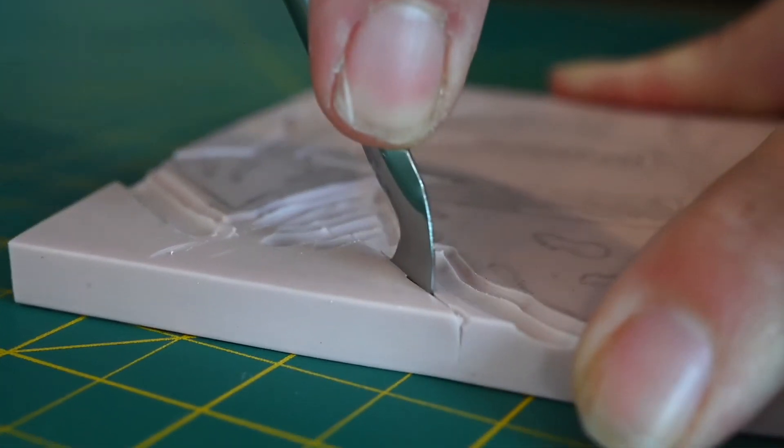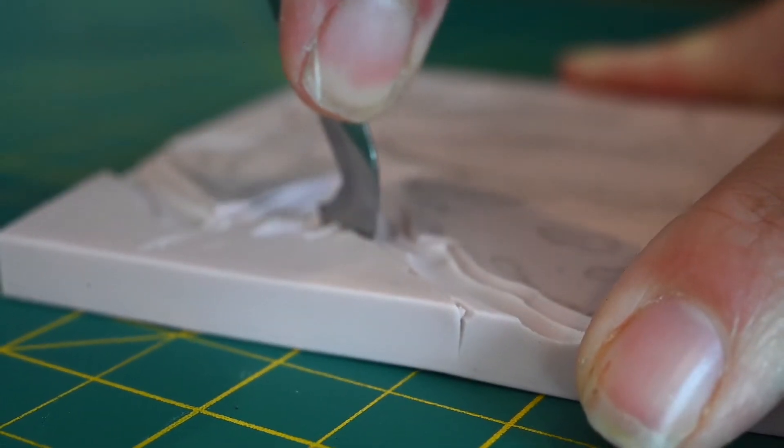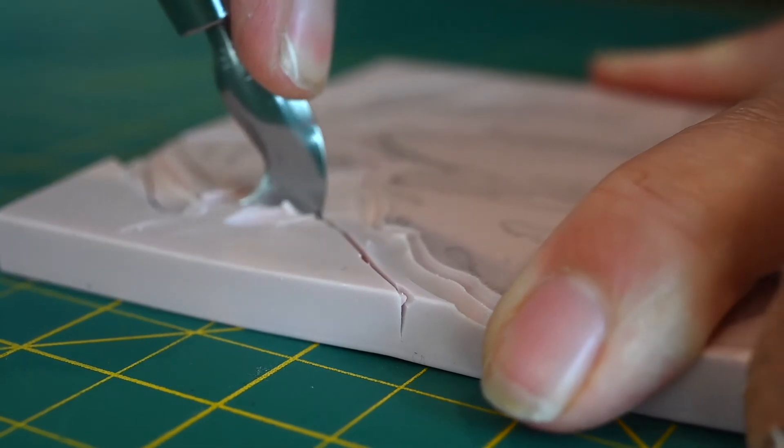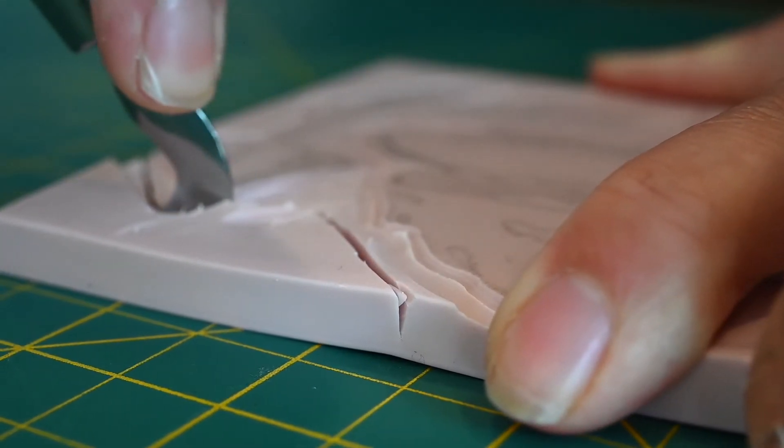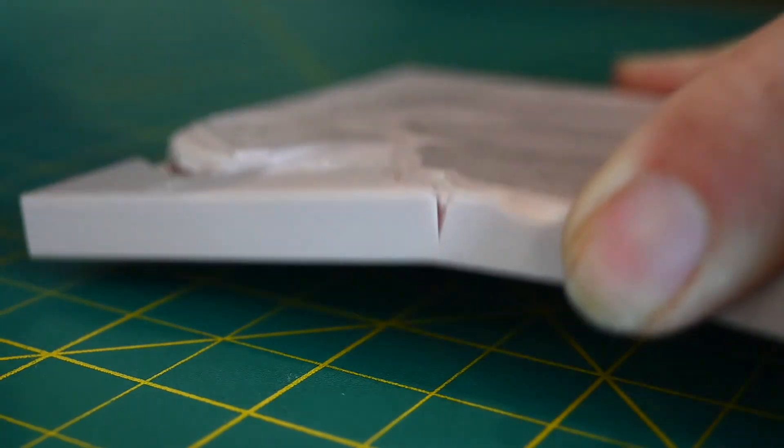Next, with the X-Acto blade, you can cut away any excess material that is more than a fourth of an inch away from your design. The reason that you do this is you'll have less rubber to clear away and it will help with the inking process.